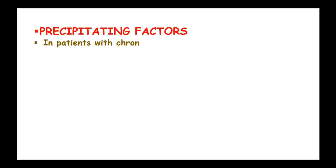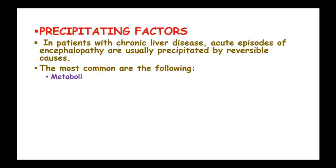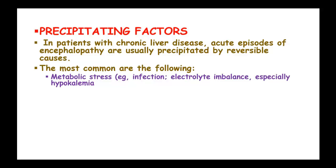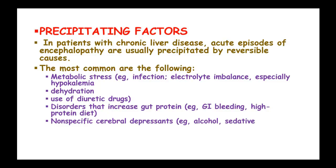The precipitating factors: in patients with chronic liver disease, acute episodes of encephalopathy are usually precipitated by reversible causes. The most common causes include metabolic stress such as infection, electrolyte imbalance especially hypokalemia, dehydration, use of diuretic drugs, disorders that increase gut protein such as gastrointestinal bleeding, high-protein diet, and non-specific cerebral depressants such as alcohol, sedatives, and analgesics.